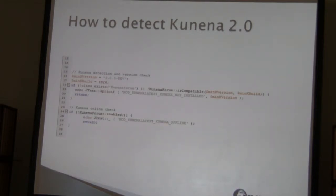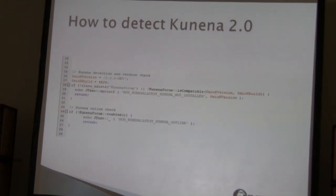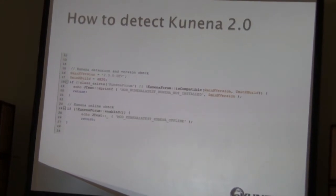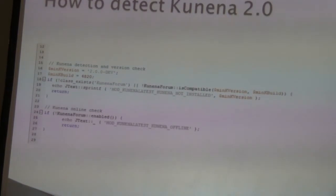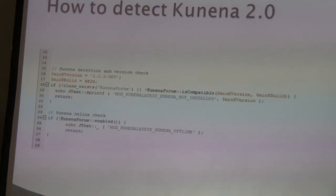Since there are a lot of coders and component designers here, let me show quickly how many lines you need for different tasks. For example, detecting Kunena is just about detecting the class, asking if it's compatible, and checking if the forum is enabled — for instance, it could be put offline by the user or administrator, or the installer could be running.